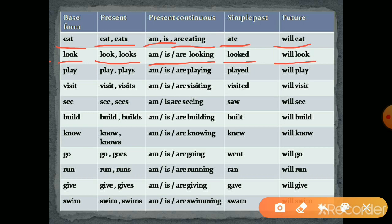Third verb, 'play': present tense — play/plays; present continuous tense — am playing, is playing, are playing; simple past tense — played; future tense — will play. Are you understanding?